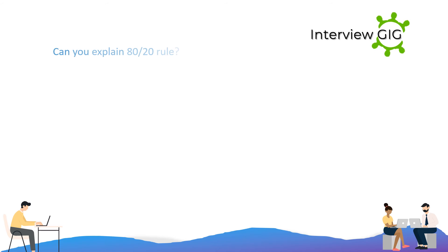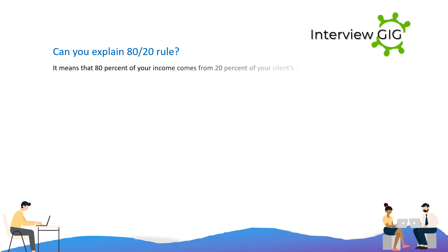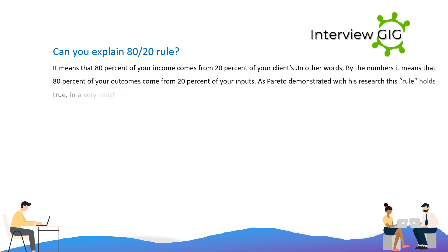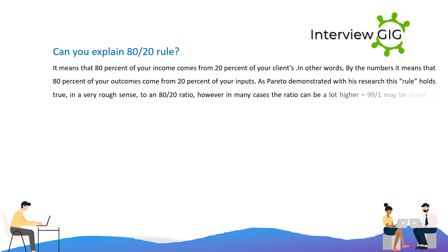Can you explain the 80-20 rule? It means that 80% of your income comes from 20% of your clients. In other words, 80% of your outcomes come from 20% of your inputs. As Pareto demonstrated with his research, this rule holds true in a very rough sense to an 80-20 ratio; however, in many cases the ratio can be much higher, and 99/1 may be closer to reality.